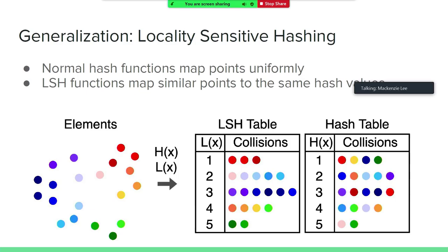The generalization of this idea is locality-sensitive hashing, and it works for more than just real-valued inputs. To get an intuitive sense of how this all works, think of dots representing elements in our collection being mapped to hash buckets. In the LSH table, the similar-colored objects all go to similar buckets: the red ones all go to bucket one, the blue ones are all in bucket three. This is not a perfect partitioning — there's a green item in bucket four which probably shouldn't be there; it got unlucky and happened to span one of those randomly decided partition boundaries. But you're certainly doing much better than with an ordinary hash table, where the assignments are essentially random.